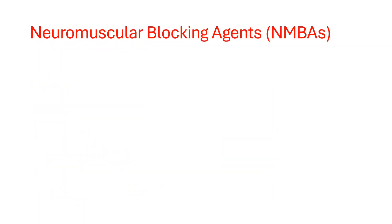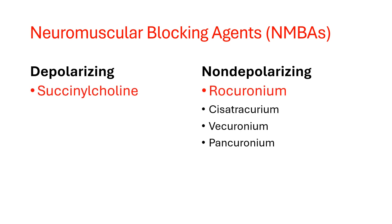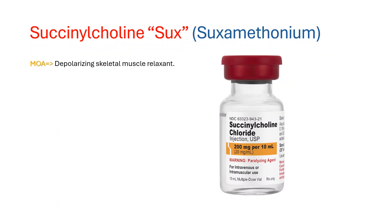Now we will talk about neuromuscular blocking agents. Neuromuscular blocking agents cause muscle paralysis and must always be used along with an induction or sedating agent. There are two categories: depolarizing and non-depolarizing. We will talk about succinylcholine and rocuronium, since they are the most used neuromuscular blocking agents in rapid sequence intubation. Succinylcholine is a depolarizing skeletal muscle relaxant that blocks acetylcholine receptors and is the most commonly used paralytic agent for rapid sequence intubation.